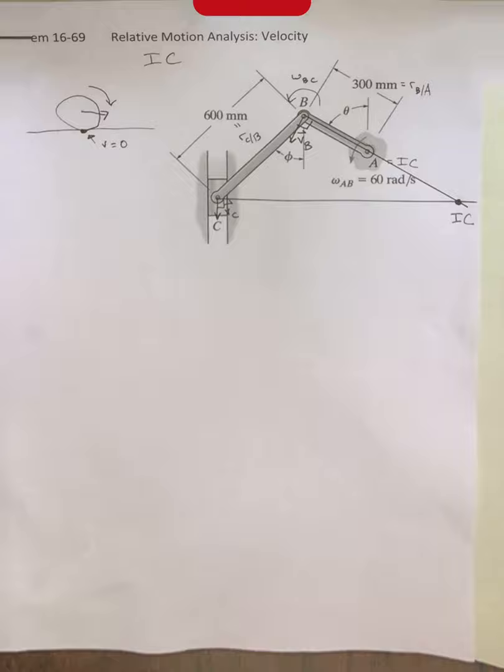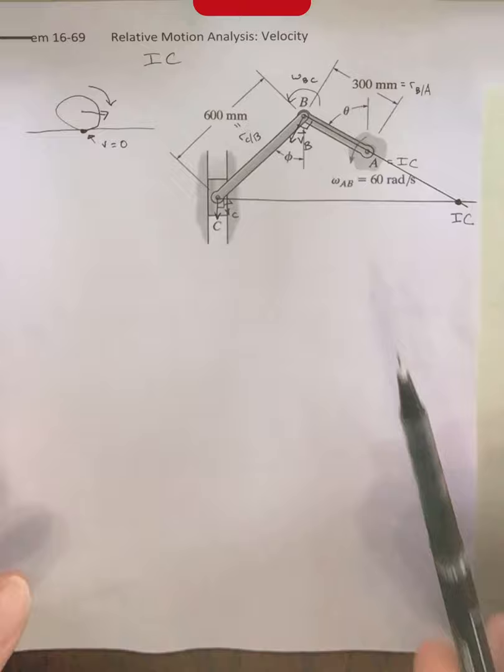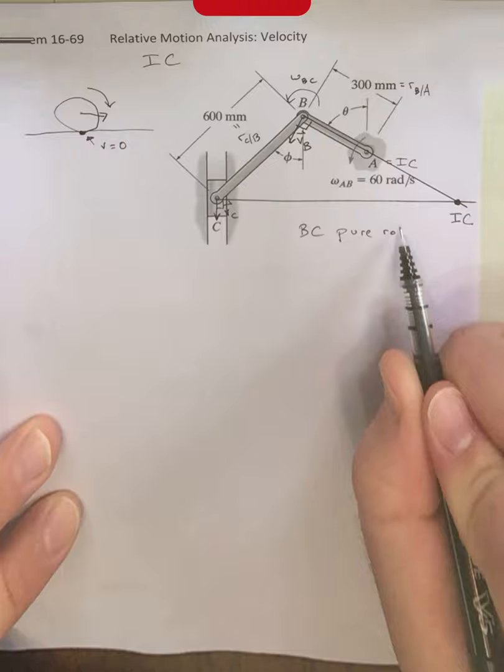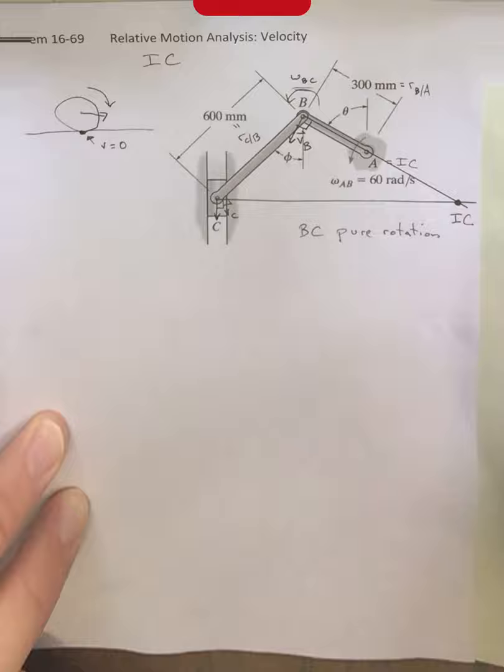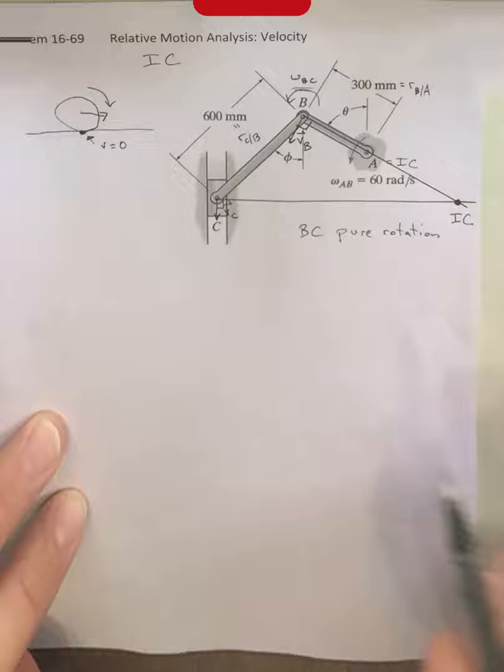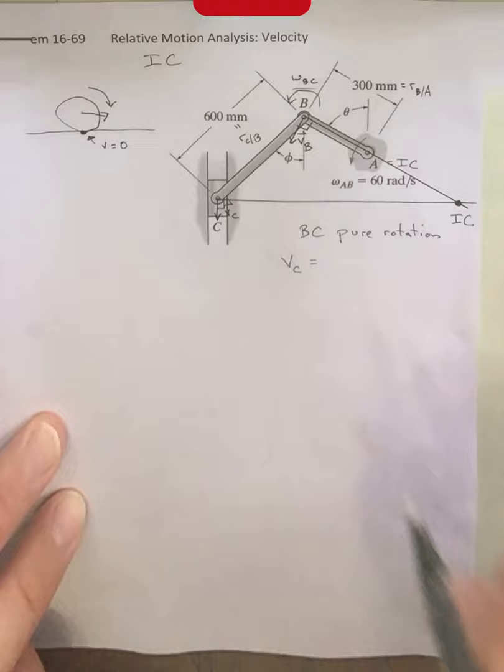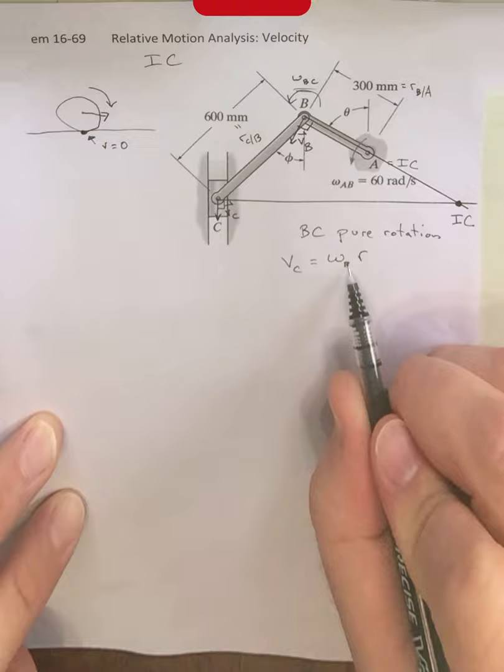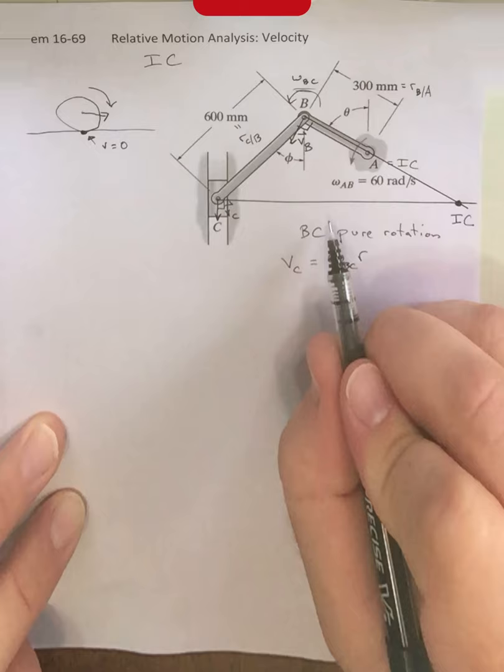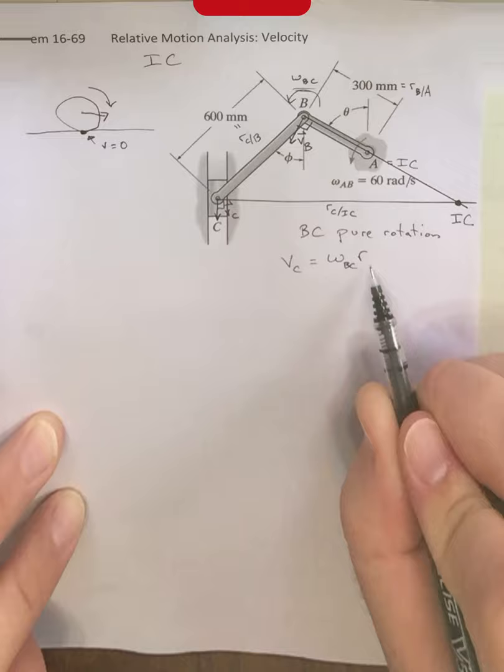Consequently, we can use the fact that at around this instantaneous center, link BC is undergoing a pure rotation. What that means is that we have this omega BC, that's representing the angular velocity of this entire link. And for a velocity representing a pure rotation, this is just equal to omega multiplied by an R. The omega here is going to be omega BC. The R is going to be this distance between the instantaneous center and C. I'm going to call that R sub C/IC. That's unknown, but it's a distance that we'll be able to measure using the geometry.